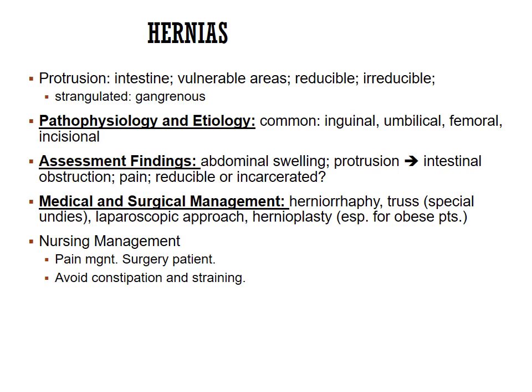Management options include a truss — a special type of supportive undergarment — to help hold the hernia in. A laparoscopic approach can be used to reduce the hernia, or a hernioplasty can be performed to put the hernia back in place and tighten the abdominal wall. For nursing management, we monitor for signs of obstruction, manage pain, and the patient may become a surgical candidate. They should avoid constipation and straining.